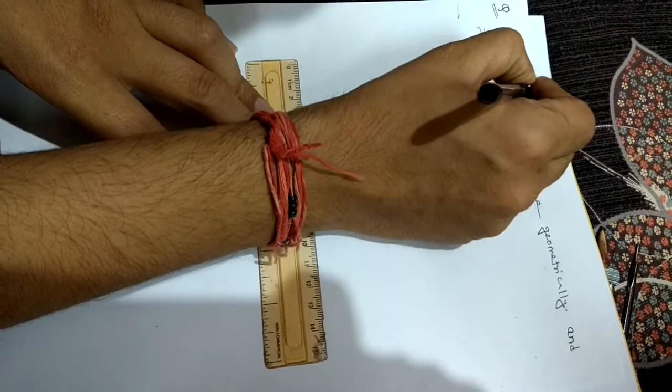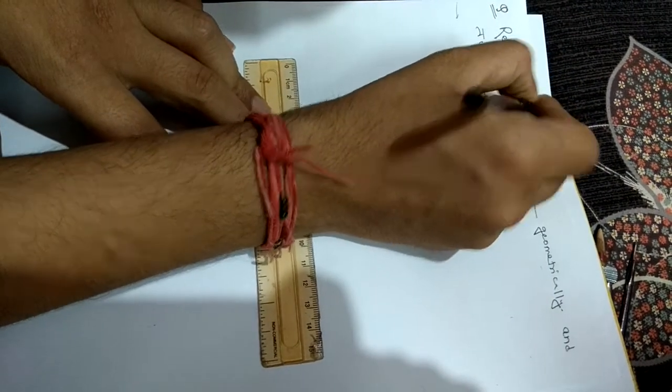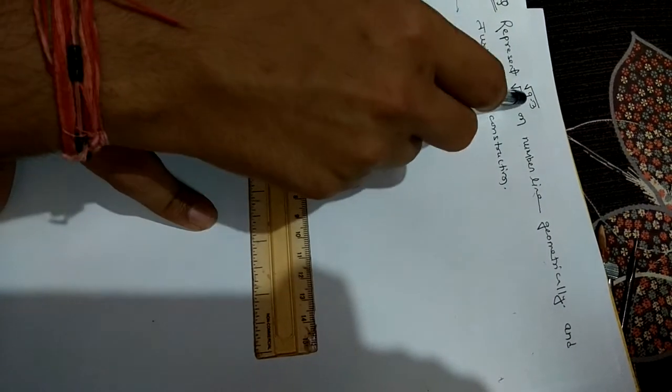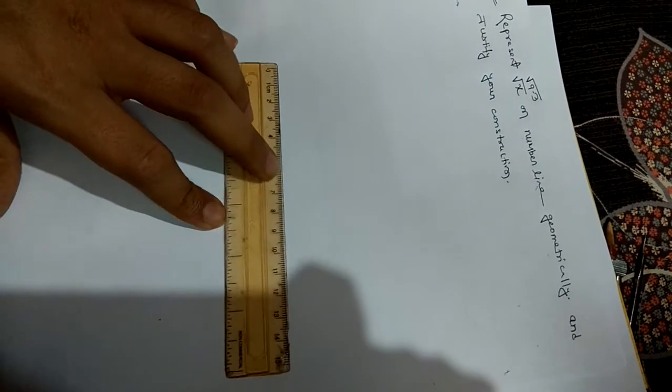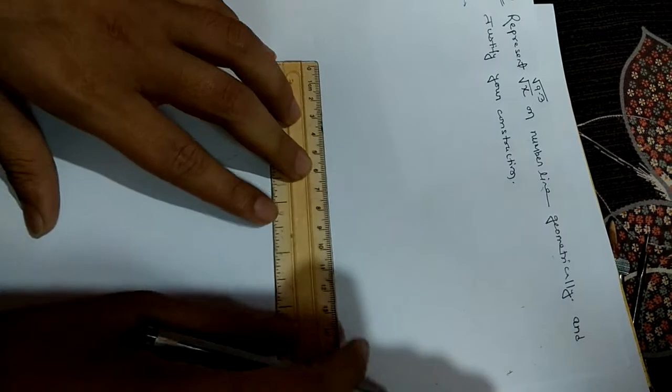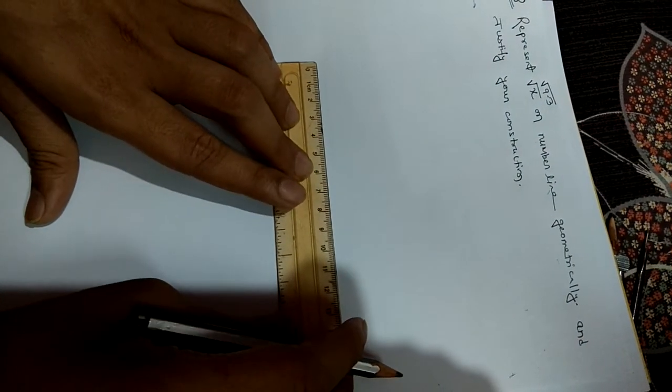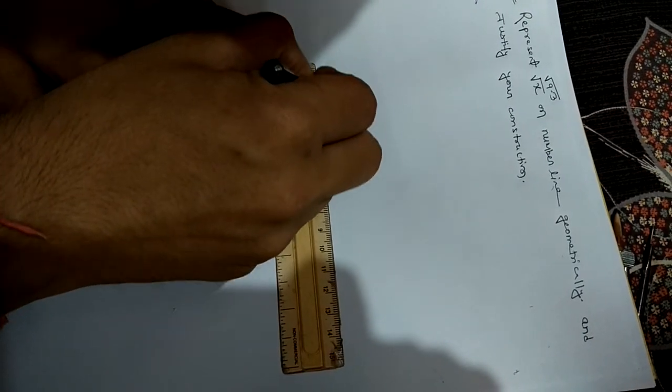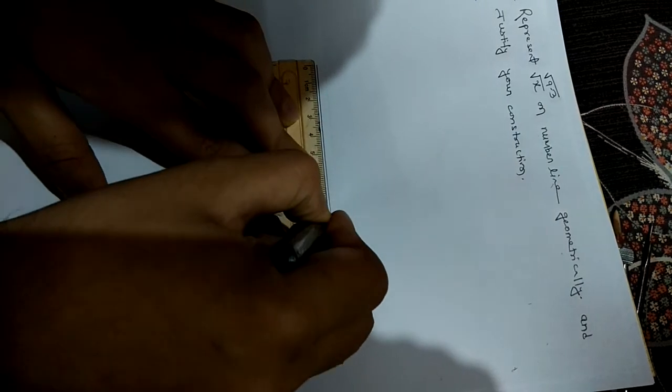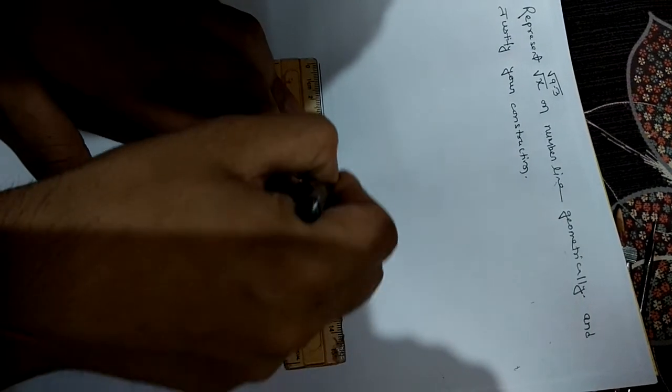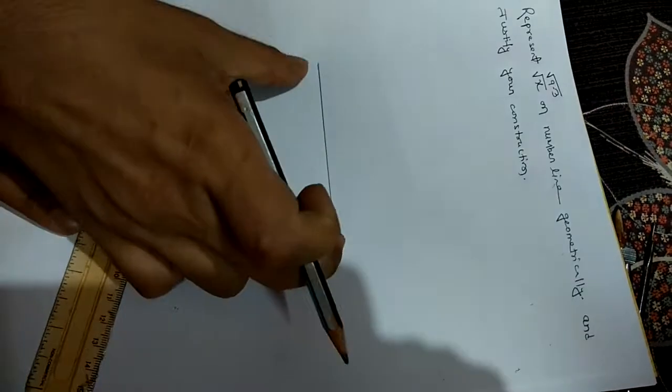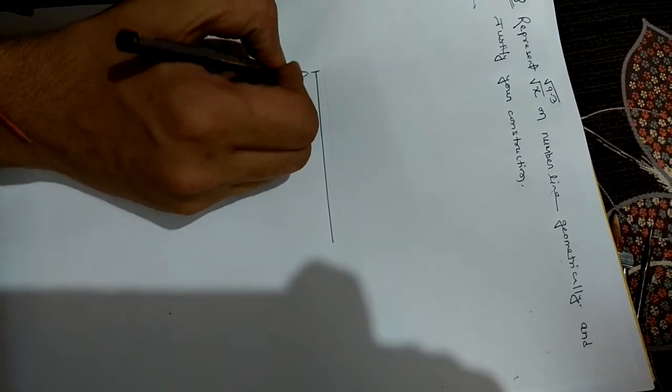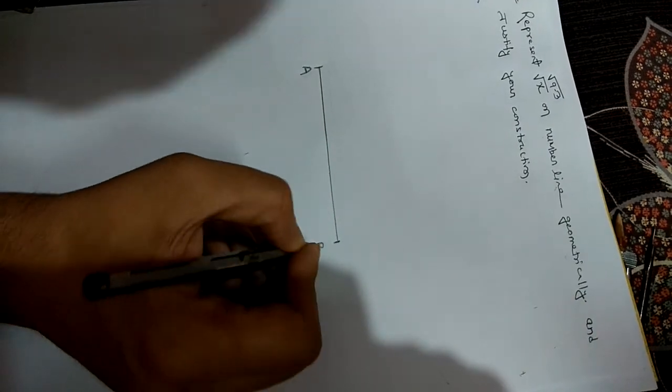The question might come like this: represent root over 9.3 on number line, under root of a decimal number. So whatever decimal number is given, like 9.3 or 6.3, we will show it here. Let's say we take 9.3 as x. First we will draw a line AB with length x centimeters.